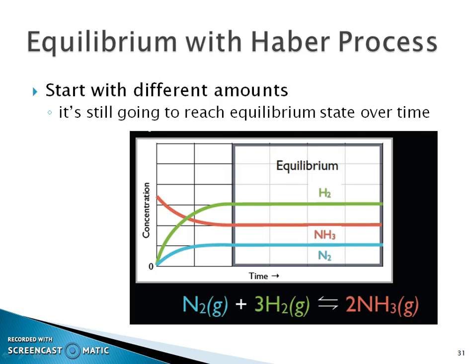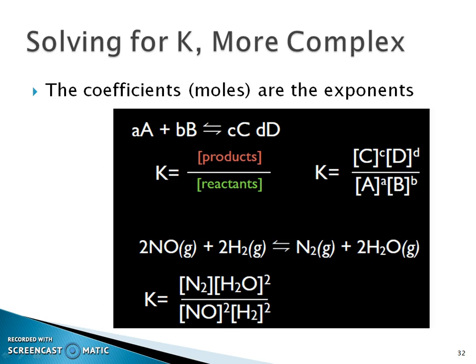Solving for K is products over reactants. This is quite different from the rate law expression — the rate law only dealt with reactants, and you needed to calculate the exponents from experimental data, the slow step, or from knowing the reaction order from a graph. K, the capital equilibrium constant, is the concentrations of products divided by the concentrations of reactants.